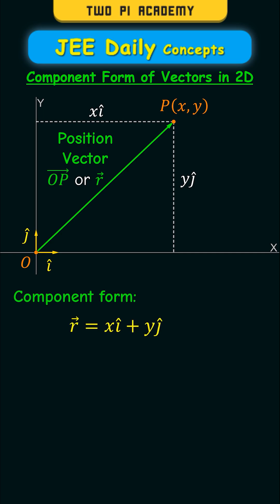Finally, the component form is the sum of these: vector r is equal to xi-cap plus yj-cap. Then you can find the length of the vector, modulus of vector r is equal to square root of x-square plus y-square.